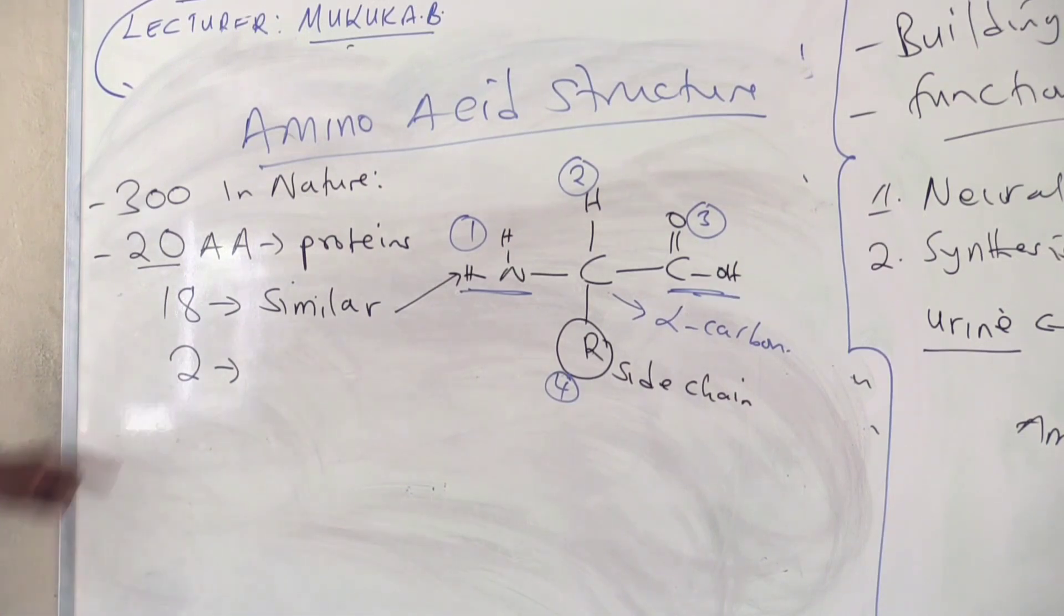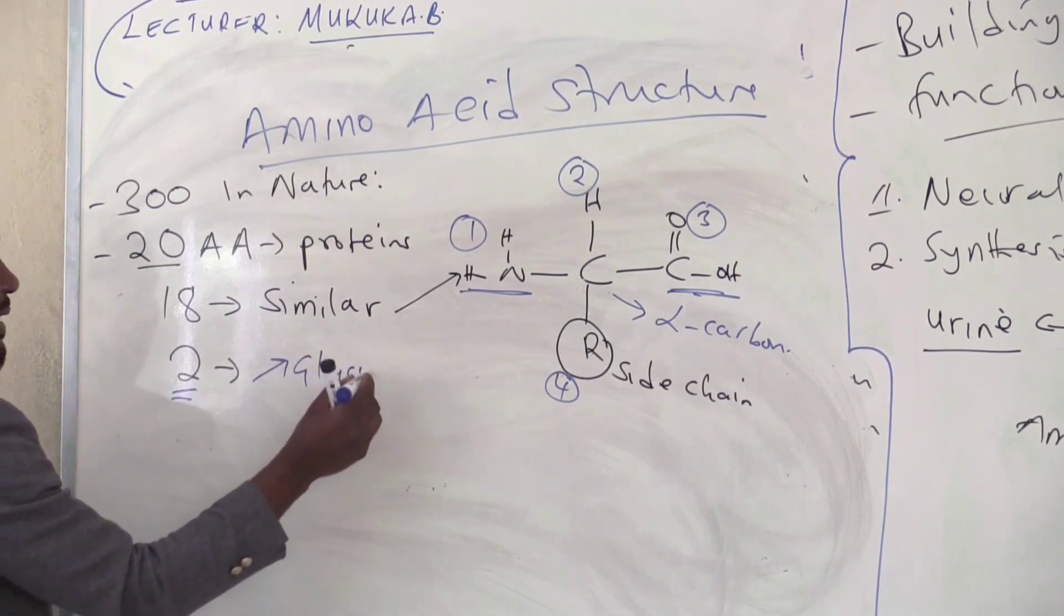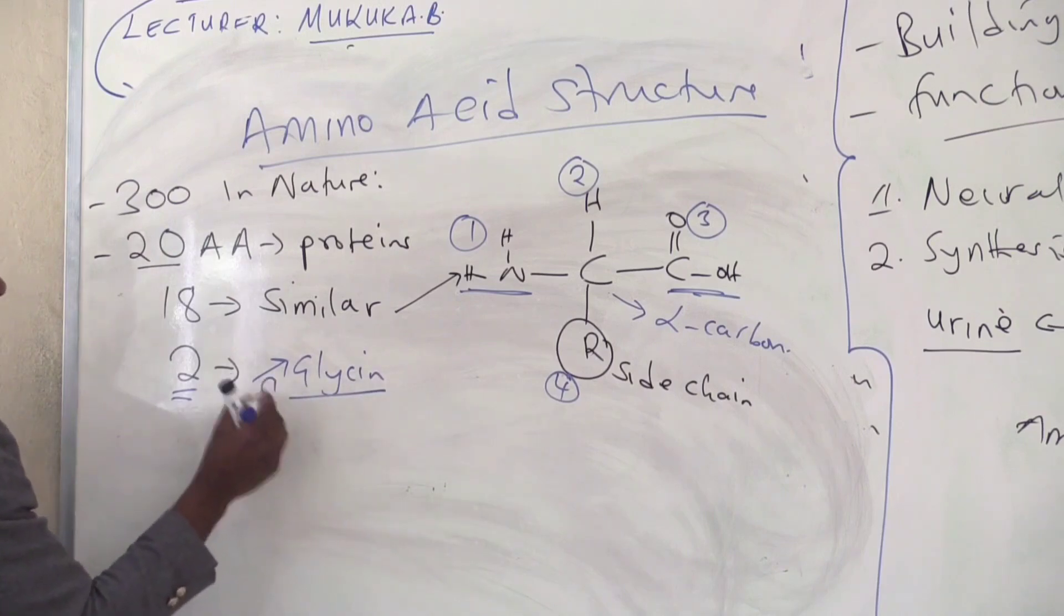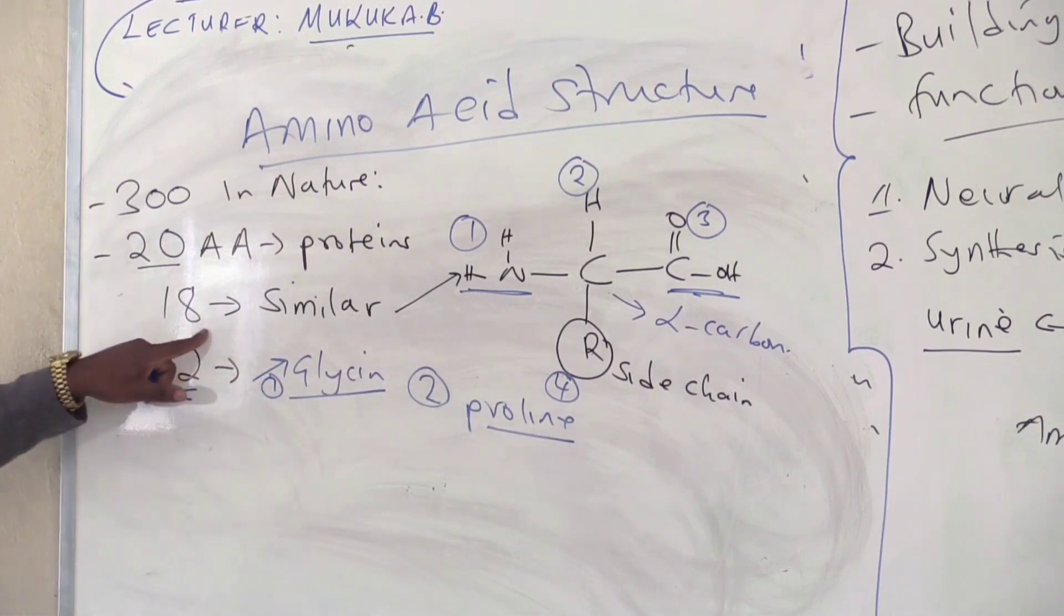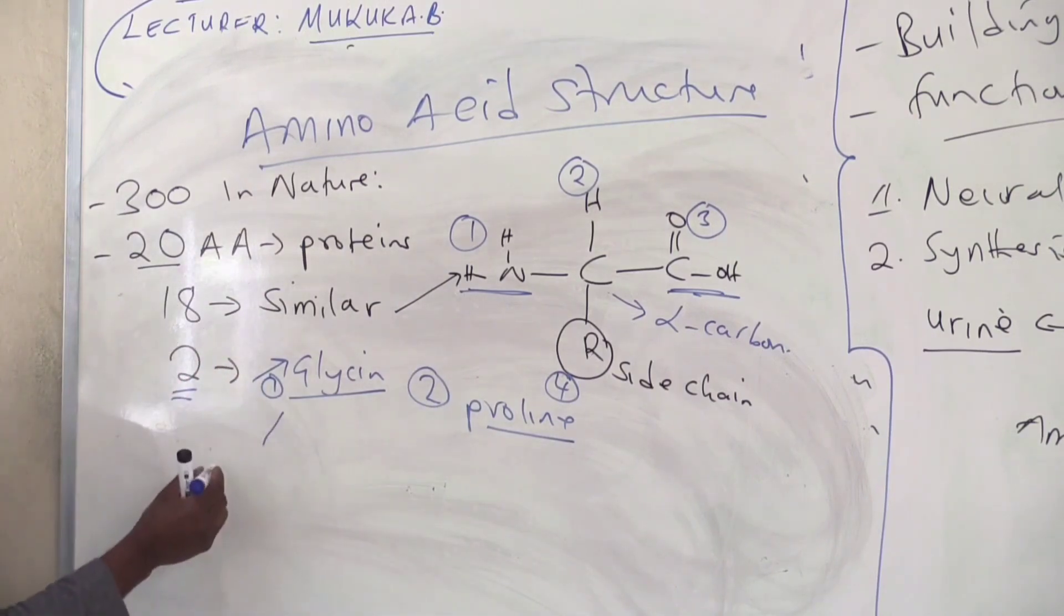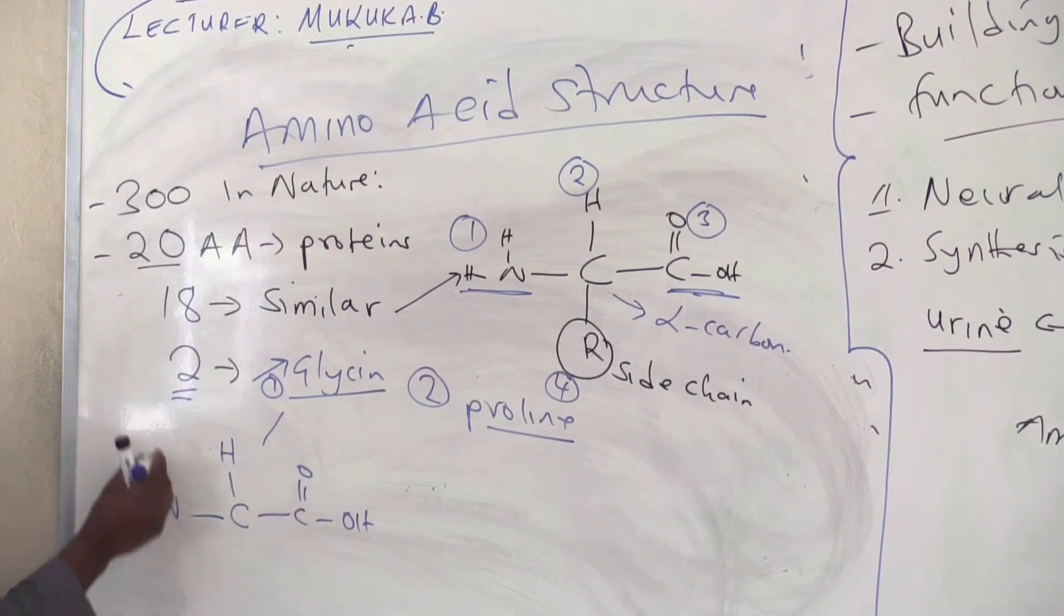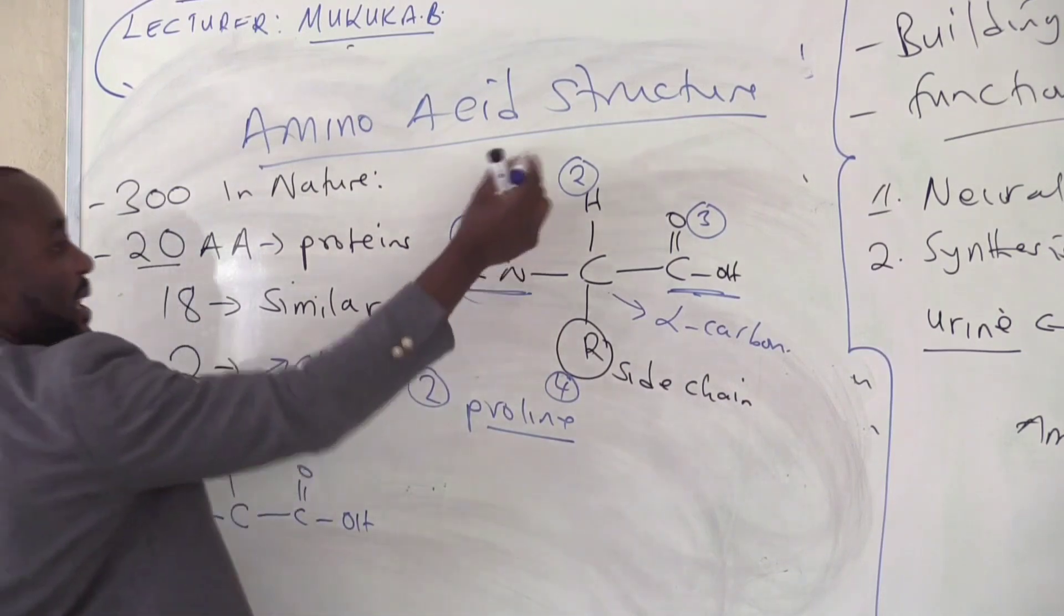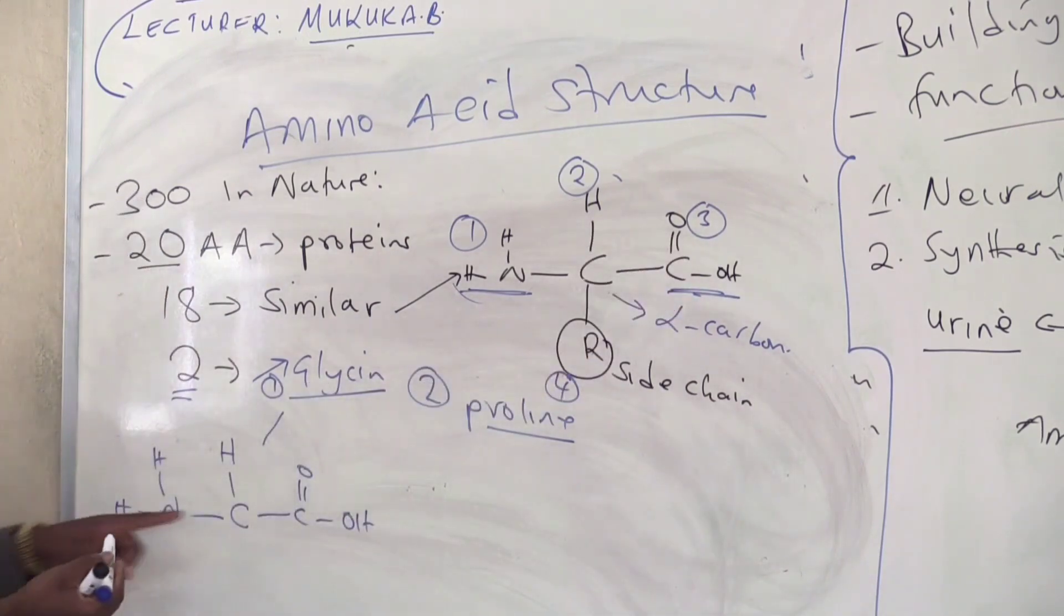Now, what about the other two exceptions? The first one is glycine, the second one is proline. How do they differ from the 18 amino acids? For glycine, it has this structure which is similar to the general structure of amino acids. You can see amino group, that's the amino there. Hydrogen atom, that's the hydrogen atom. Carboxyl, that's the carboxyl there.